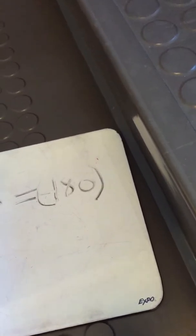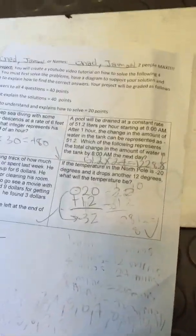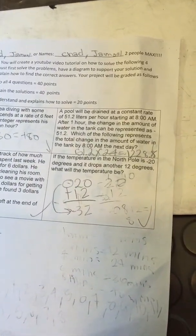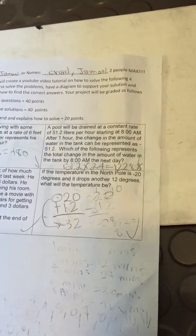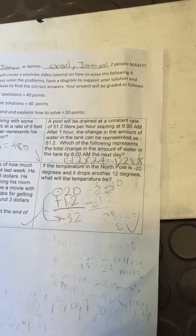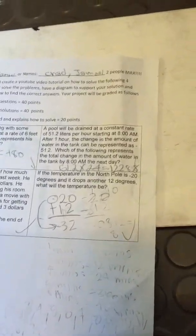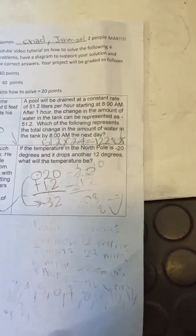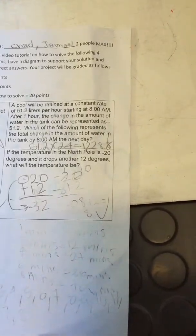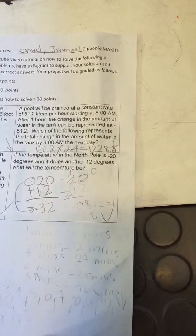The next problem is a pool will drain at a constant rate of 51.2 liters per hour starting at 8 a.m. After one hour, the change in the amount of water in the tank can be represented as negative 51.2. Which of the following represents the total change in the amount of water in this tank by 8 a.m. the next day?